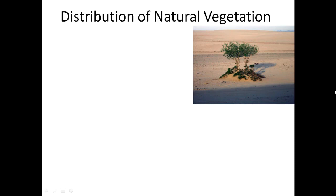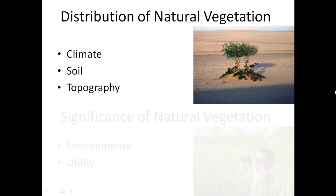Now we will see what are the factors responsible for the distribution of natural vegetation in a particular region, in context with India. There are three primary factors: climate, soil, and topography. We will understand each factor in detail.